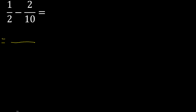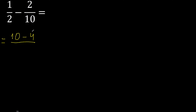First, multiply like this: 10 multiplied by 1 is 10, minus 2 multiplied by 2 is 4. Here, 2 multiplied by 10 is 20.